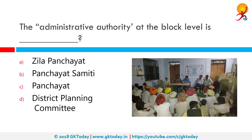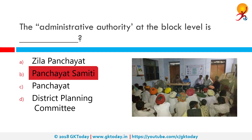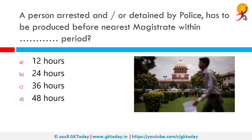The administrative authority at the block level is Panchayat Samiti. The three-tier Panchayat institutions consist of a Gram Panchayat at the lowest level, Panchayat Samiti at the block level, and Zila Parishad at the district level. The administrative authority at the block level is Panchayat Samiti.